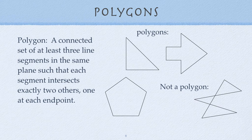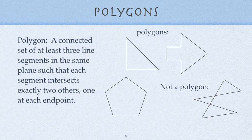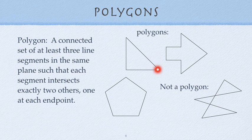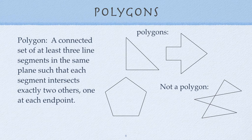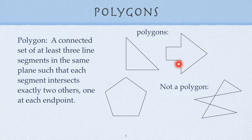Let's talk about polygons. A polygon is a connected set of at least three line segments in the same plane, such that each segment intersects exactly two others, one at each endpoint. So here is a vertex, here is a vertex, here is a vertex. This polygon has a bunch of vertices—that's the plural of vertex. How many sides does this thing have? It has one, two, three, four, five, six, seven.